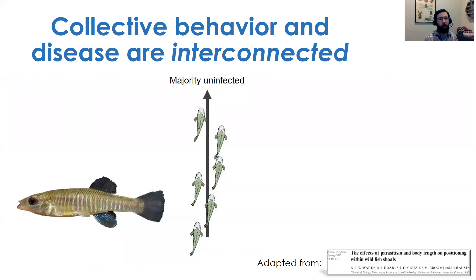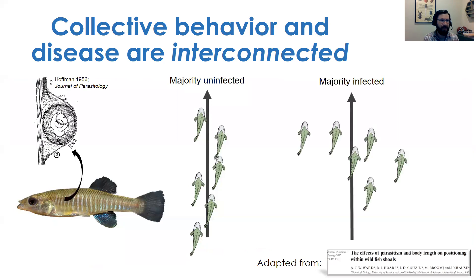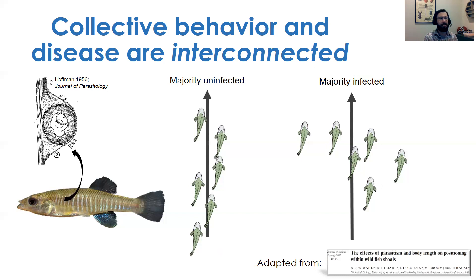Another cool example is shoal formation in banded killifish. When the majority of individuals in a shoal are uninfected, these killifish swim in a processional-style shoal with an elliptical shape. But when the majority are infected with skin-encysting trematode parasites, they show a more phalanx-like shoal with more individuals at the leading edge. This shape of the shoal can affect food availability, navigational potential, and predation risk.